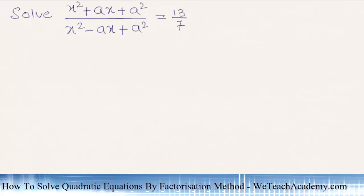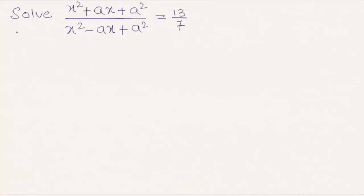Hey guys, welcome to vteachacademy.com. In this presentation we are going to solve a few examples on factorization. Here, solve x squared plus ax plus a squared divided by x squared minus ax plus a squared equal to 13 divided by 7.